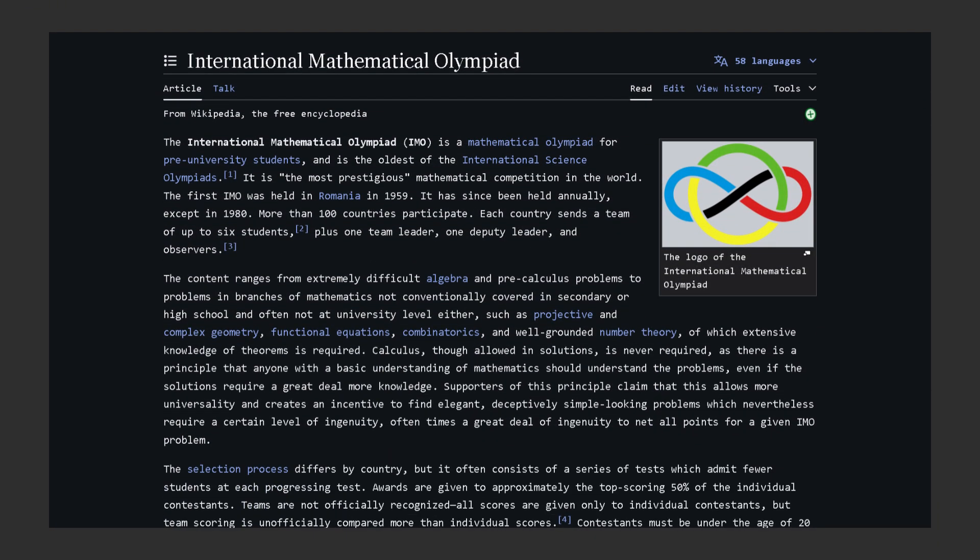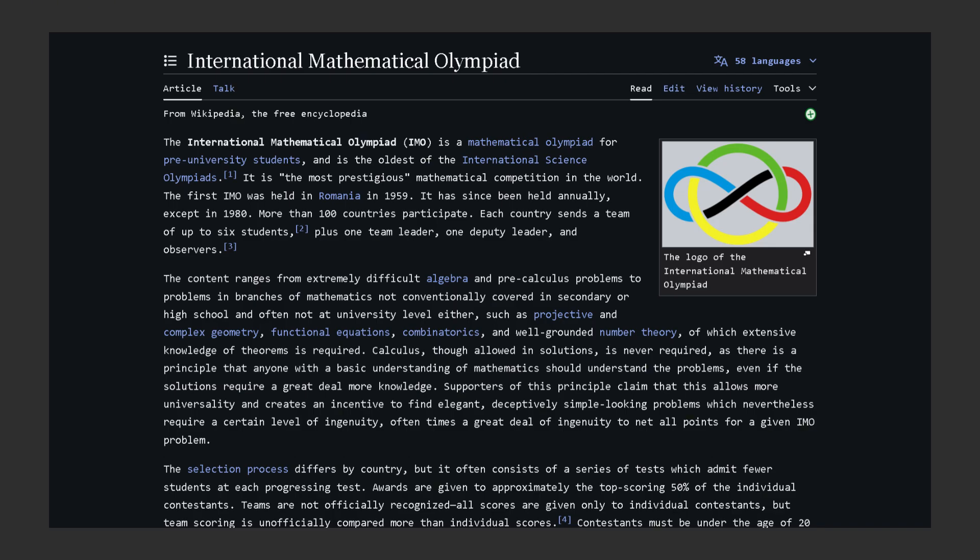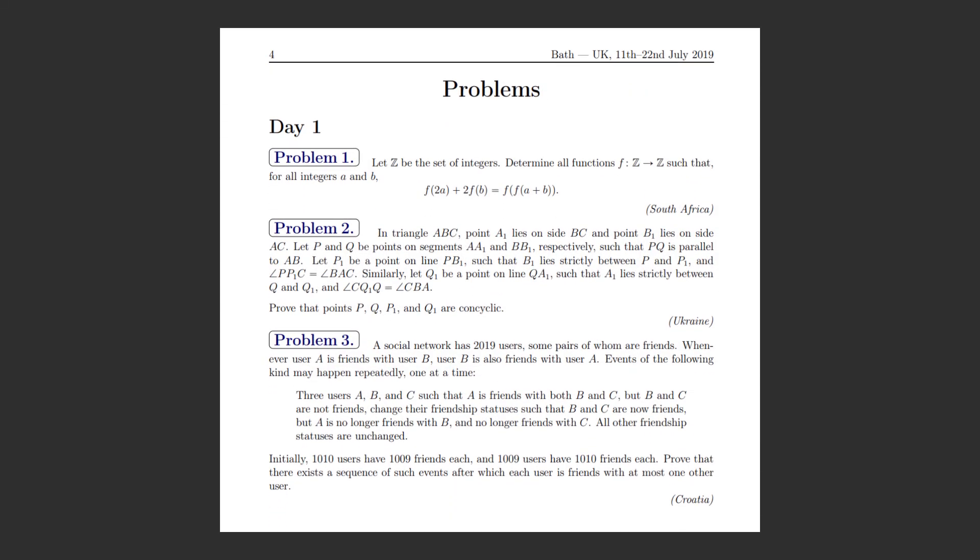The IMO is a yearly competition for the brightest high school math students on the planet. It's split over two days and students have four and a half hours each day to solve three problems, so nine hours and six problems in total. This is question one from the 2019 version of the competition.